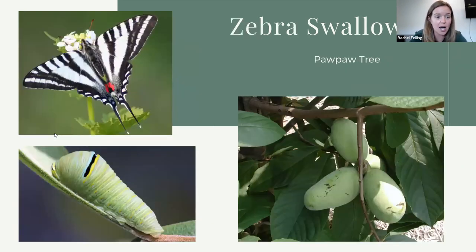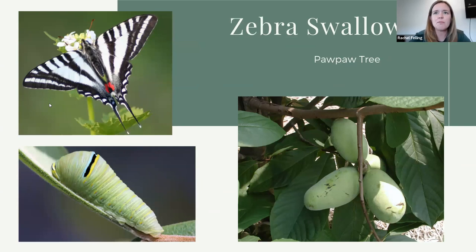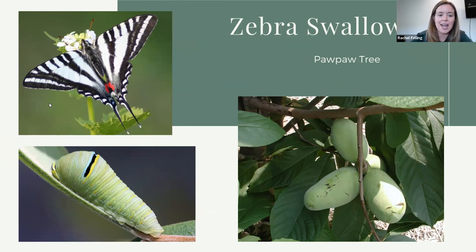Let's take a look at a less common but oh my goodness gorgeous zebra swallowtail. I don't see zebra swallowtails all the time — usually a few every summer, usually in woodlands. They have long, long tails. You can see where the name comes from with those black and white stripes, so vibrant, and then a little patch of red. Absolutely gorgeous butterfly — quite possibly my favorite, prettiest butterfly in my opinion.